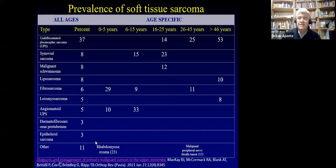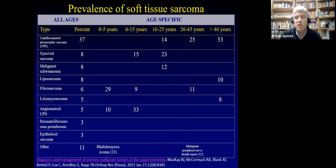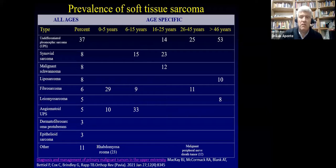Soft tissue sarcomas differ from bone sarcomas in treatment: resection is the mainstay and radiation may be given in some cases, depending on grade. The real grade is sometimes only known after resection. Soft tissue sarcomas are more common than bone tumors but there are more types, so we do not have enough knowledge of the specific treatment for each. It is a big challenge for us.